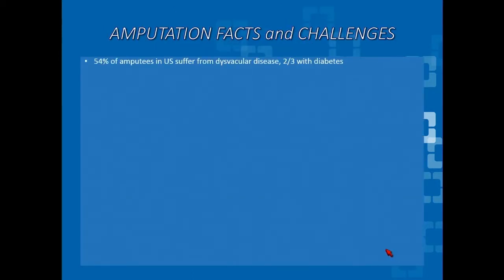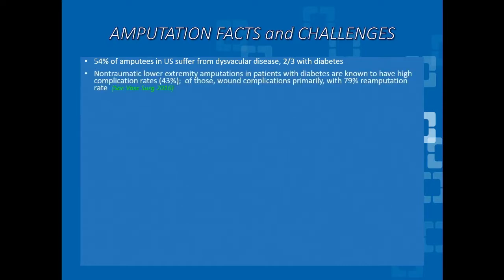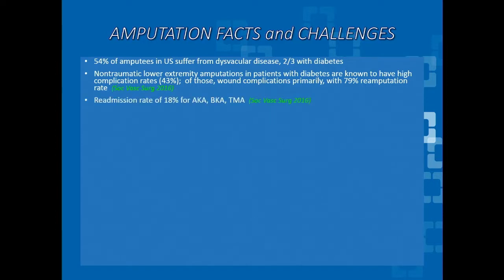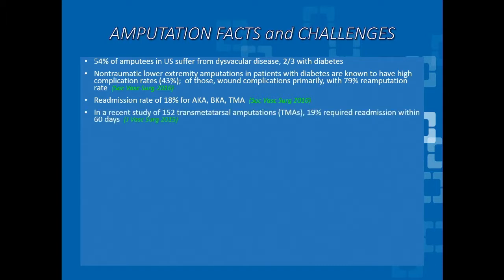If we look at challenges and facts of amputation, there are many reasons — congenital limb deformities, tumors, prior history of diabetic foot complications — but about 54% are because of dysvascular disease, and two-thirds of those have diabetes. The non-traumatic lower extremity amputation in patients with diabetes are known to have high complication rates, specifically wounds, either from dysvascular state or infection. The majority go on to have a re-amputation. Readmission rates are high for all levels, and even in transmetatarsal amputations, within the first 60 days, 19% required readmission.